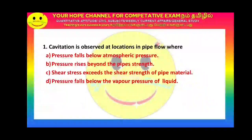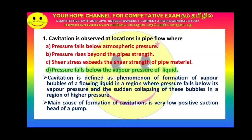First question: Cavitation is observed at locations in pipe flow where? The answer is option D: where pressure falls below the vapor pressure of liquid. Cavitation occurs when suction pressure on top of the pipeline is very low, creating a vacuum. When pressure is equal to or less than the vapor pressure of the liquid, cavitation occurs.